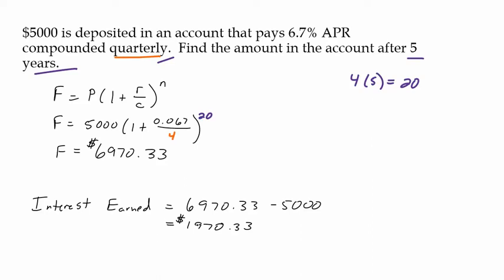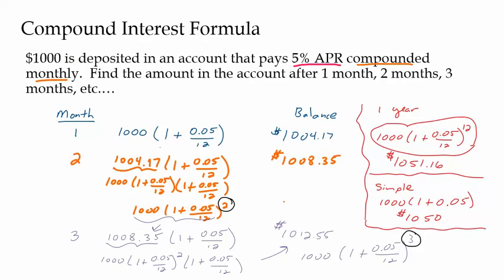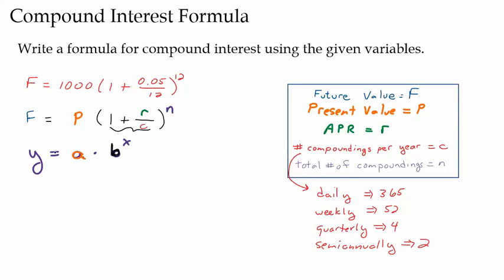I hope that helped you understand the compound interest formula. Take a moment to reflect on what compound interest is — it's just exponential growth — and what the initial value is, what the growth factor is, and how you take the annual percentage rate and divide by the number of compoundings to calculate that growth rate.